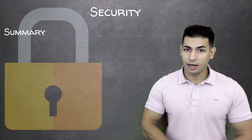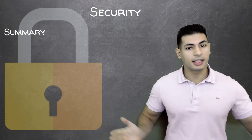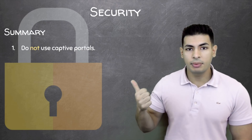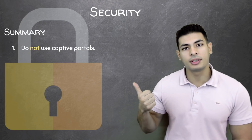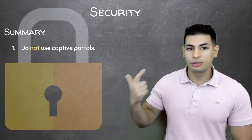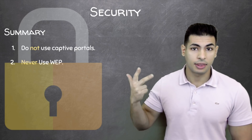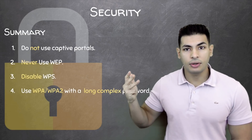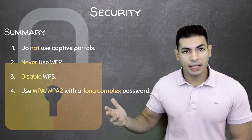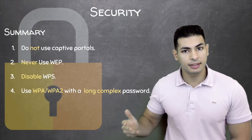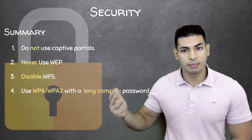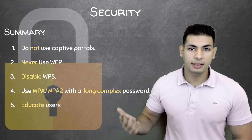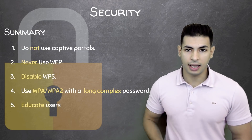To summarize, if you want to secure your network from the gaining-access attacks we've covered: first, don't use captive portals — implement WPA Enterprise if you want similar functionality. Second, never use WEP. Third, disable WPS. Fourth, use WPA or WPA2 with a complex password of letters, numbers, and symbols. Fifth, educate your users to make sure they won't be victims of a social engineering attack.